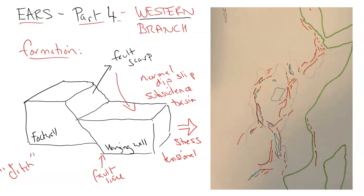A full graben would have a similar foot wall on the other side. In terms of movement, the western branch is somewhat stable — this is the African plate, or the Nubian plate, which contains most of Africa, and then the Somalian plate. These sub-plates will eventually break off. The western branch is largely controlled by the strength of the Tanzanian craton and the lack of volcanism. You have half grabens where the majority of stress is going east, so there is still divergence but most movement goes eastward — that is the formation mechanism.